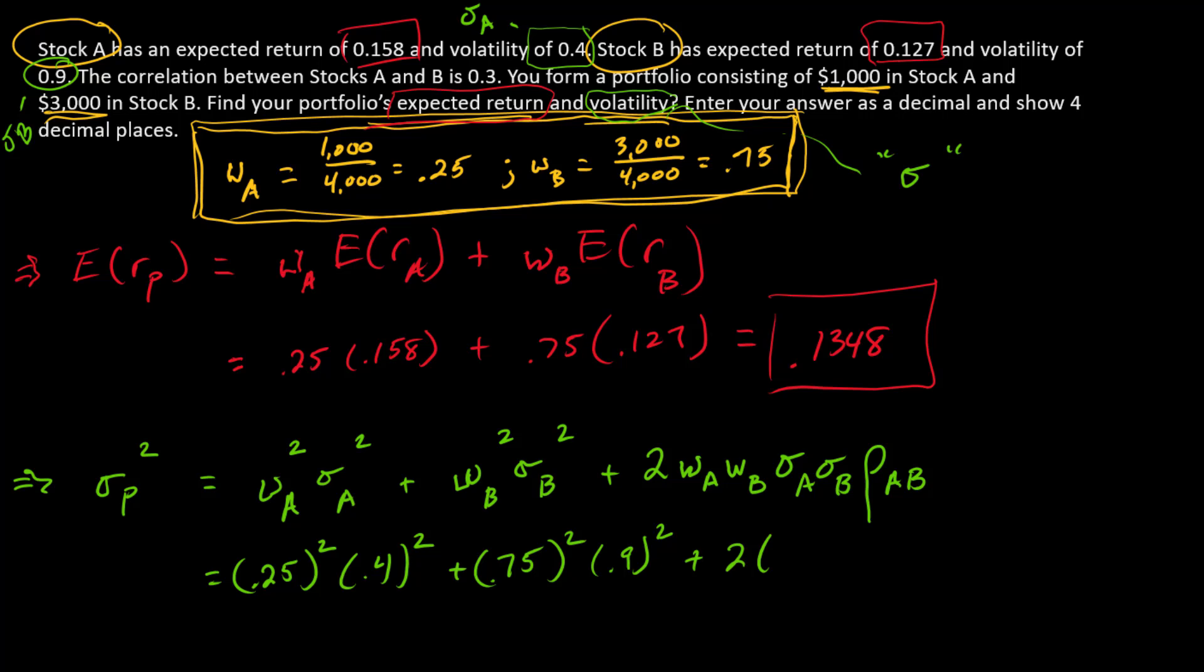Now let's go to the cross term. So 2 times the product of the weights. So we've got the 0.25 and the 0.75 going in here. Then the product of the volatilities. So sigma A times sigma B. So that's going to be 0.4 for sigma A and 0.9 for sigma B. And the correlation coefficient. That is right here. Correlation coefficient is 0.3. Multiply by 0.3.